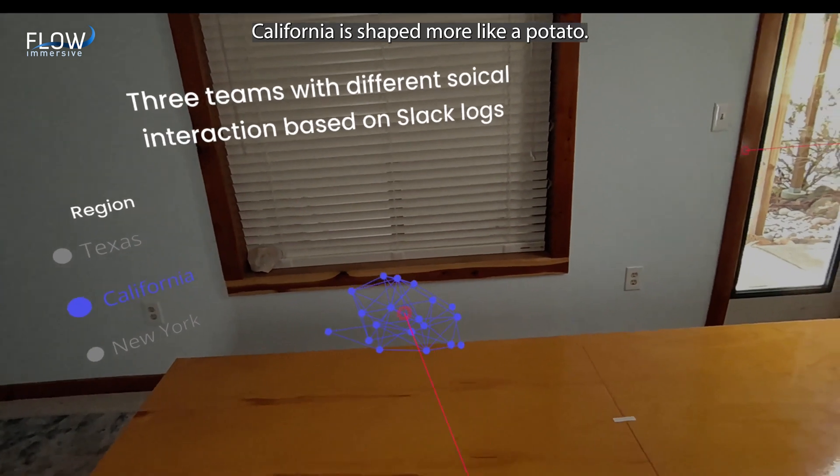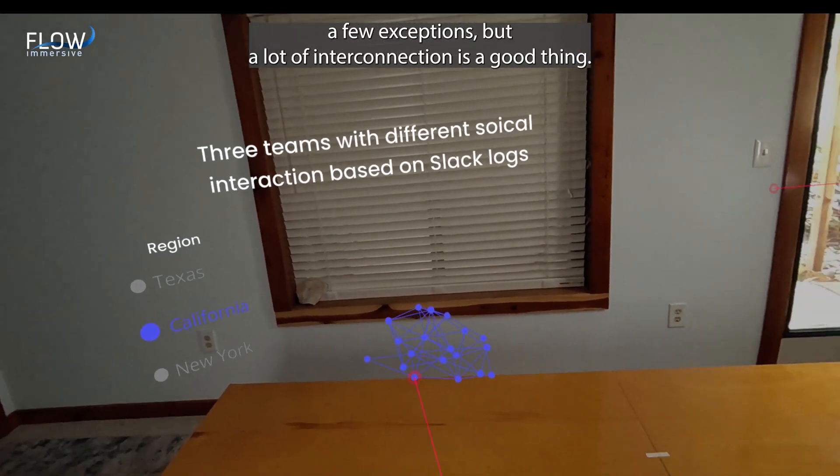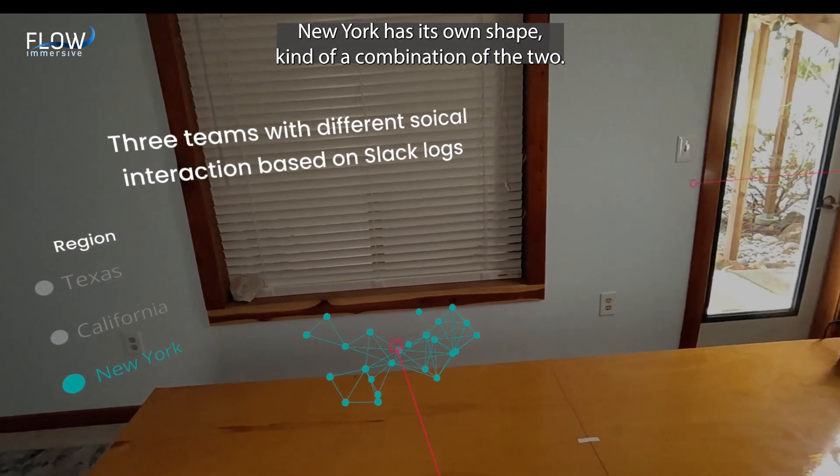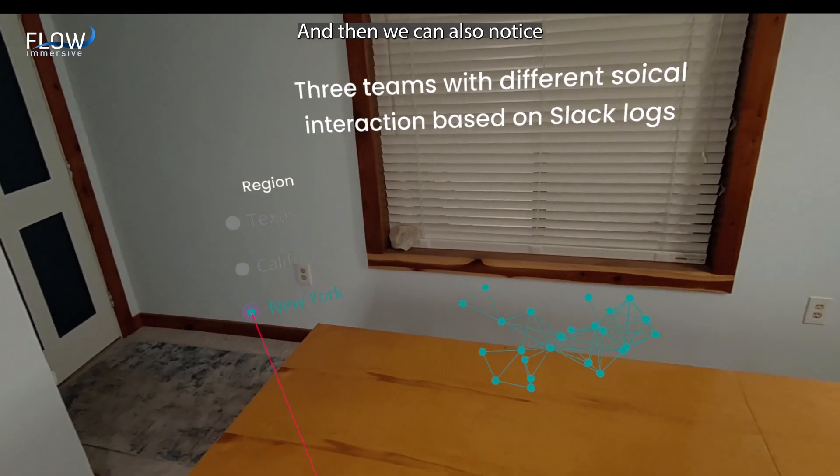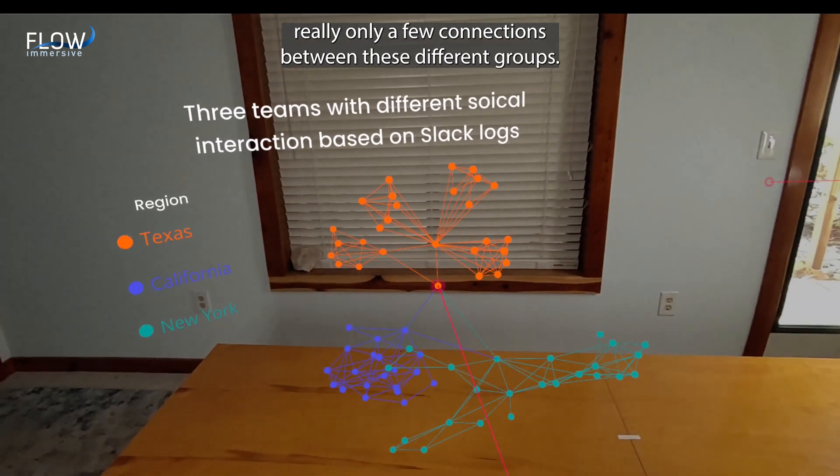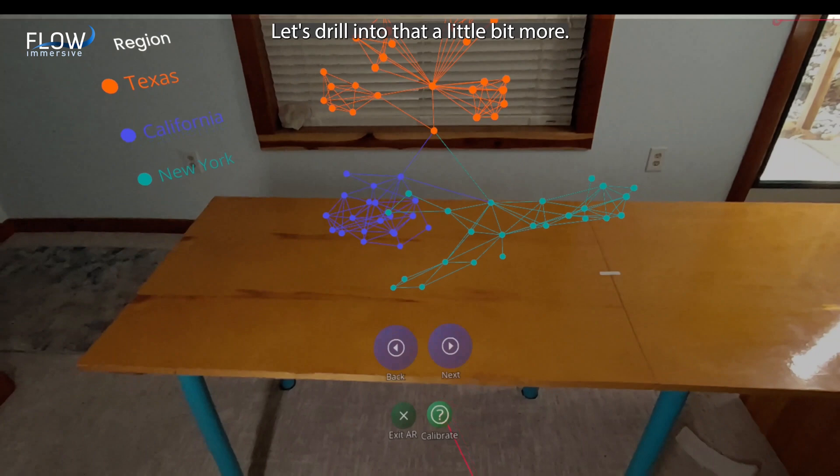California is shaped more like a potato. This is good. A lot of people, everybody talking to each other. A few exceptions, but a lot of interconnection is a good thing. New York has its own shape, kind of a combination of the two. And then we can also notice that there's really only a few connections between these different groups. Let's drill into that a little bit more.